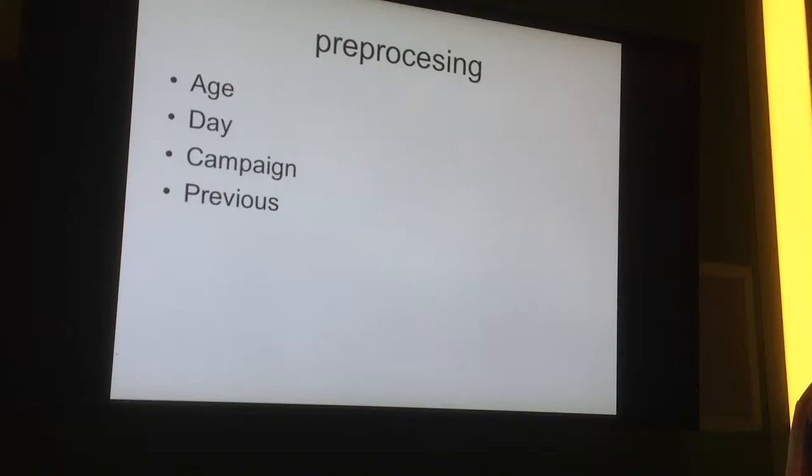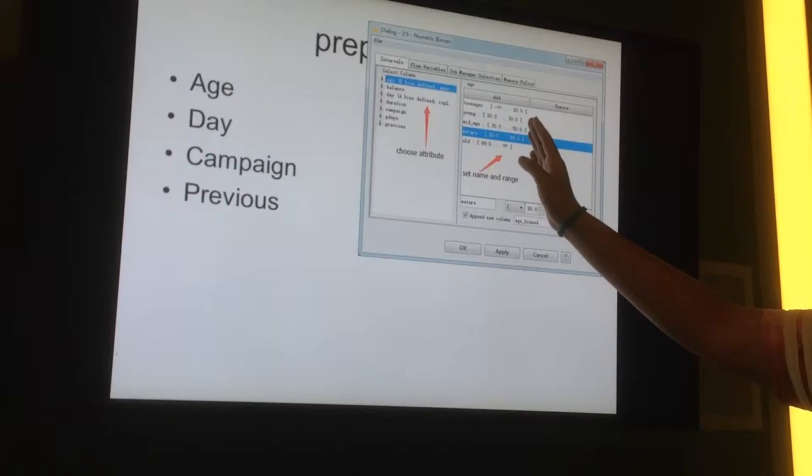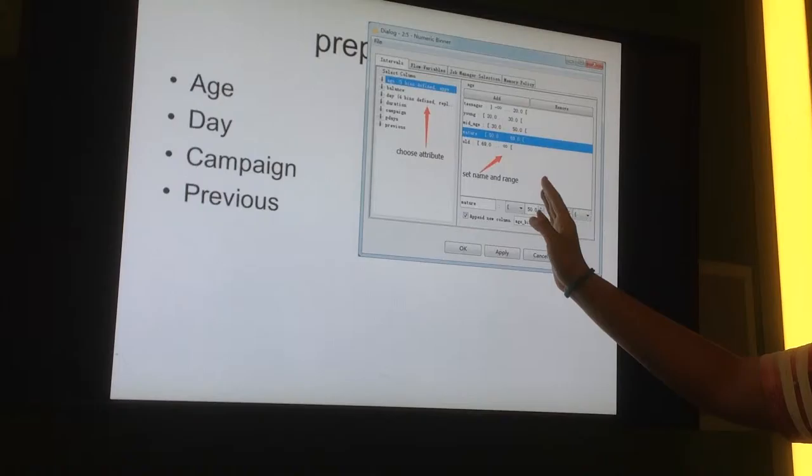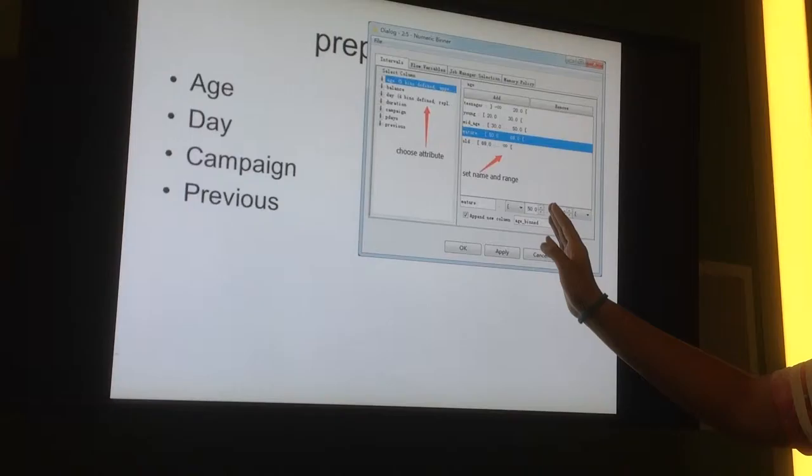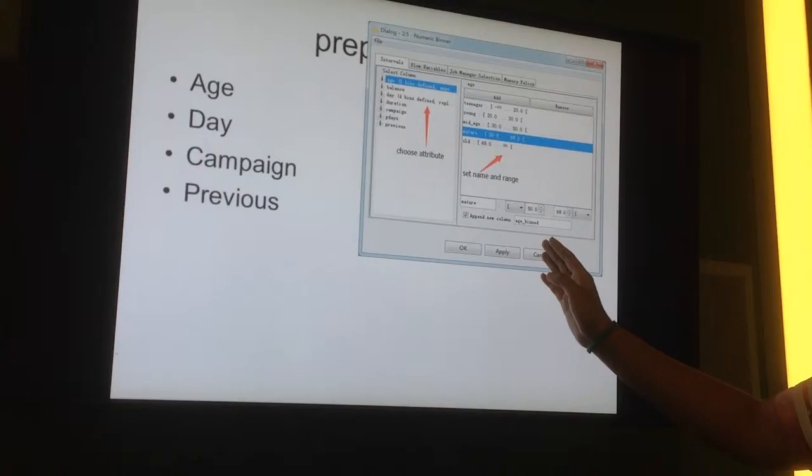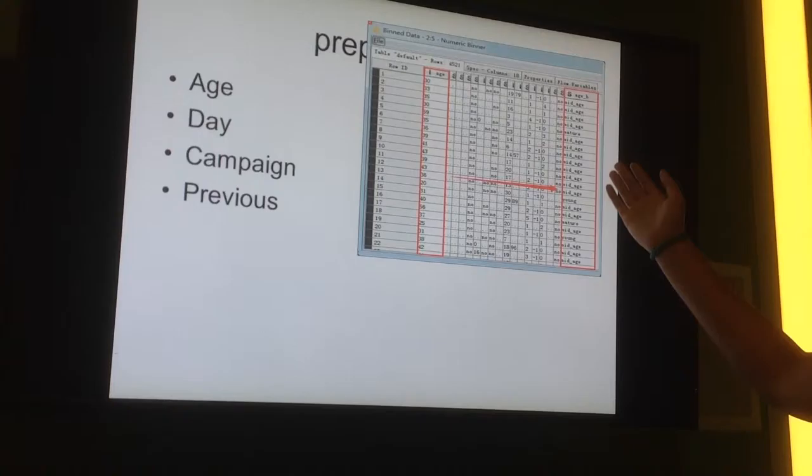Before we build the model, we will do the preprocessing for four attributes. The age attribute has a big range, from 19 years old to 87 years old, so we will separate them into five groups: Teenager from minimum to 20, Young from 20 to 30, Mid-age from 30 to 50, Major from 50 to 69, and Old from 69 to maximum. We will use numeric binder to do that.